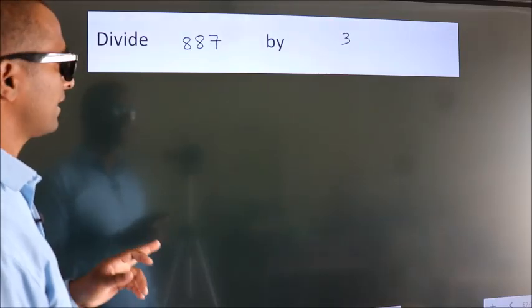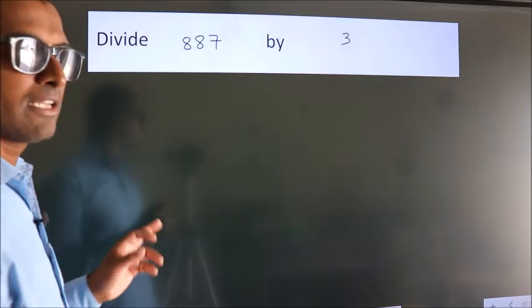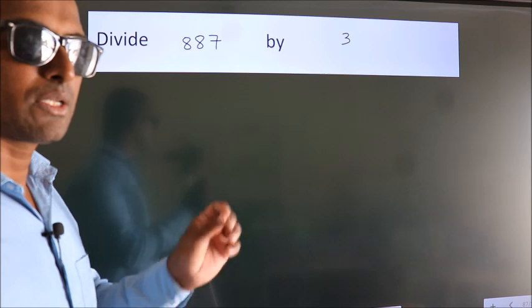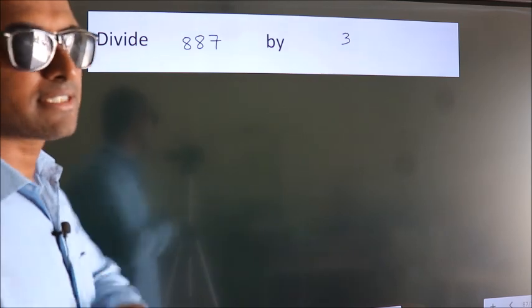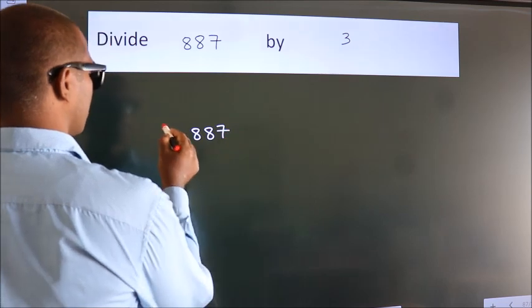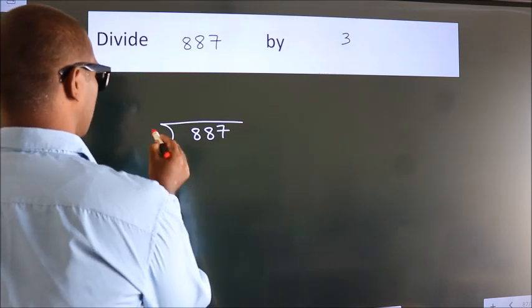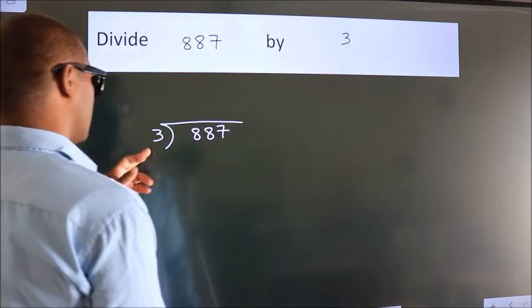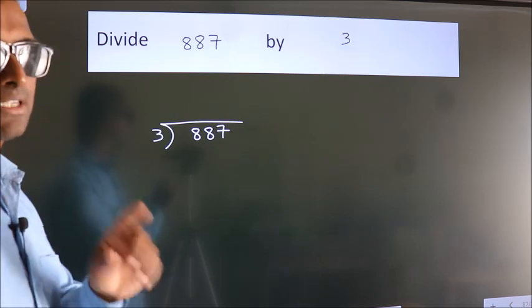Divide 887 by 3. To do this division we should frame it in this way. 887 here, 3 here. This is your step 1.